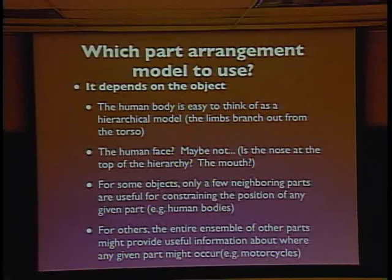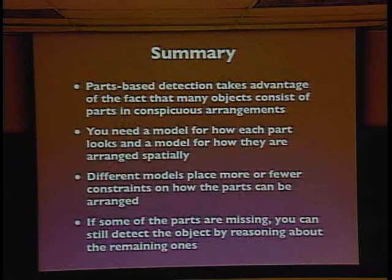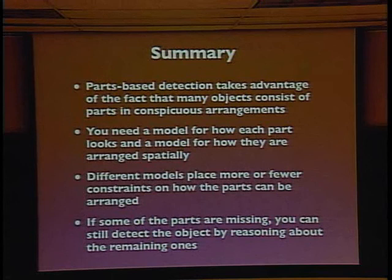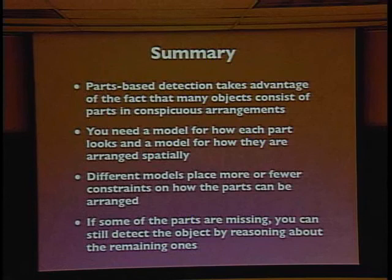The right part arrangement model depends on the object and various engineering considerations. To summarize: parts-based detection takes advantage of the fact that there are many objects consisting of well-defined parts in terms of their appearance that appear in conspicuous spatial arrangements. To solve that problem you need a model for how each part looks and how they are arranged spatially, and there are various ways to do this spatial arrangements of parts modeling. And if some of the parts are missing, you can be smart about detecting the object in spite of that.